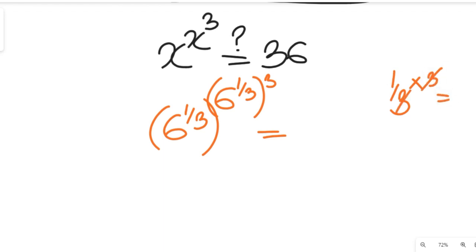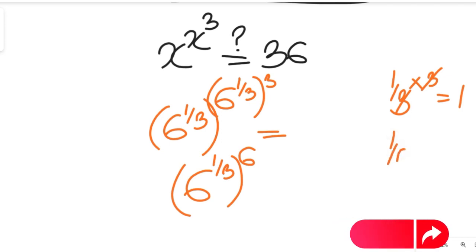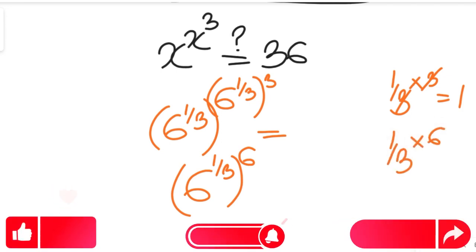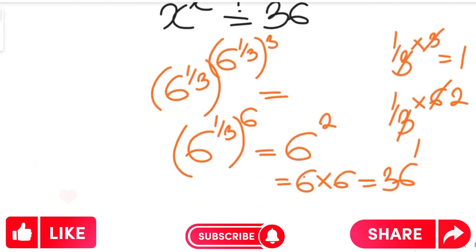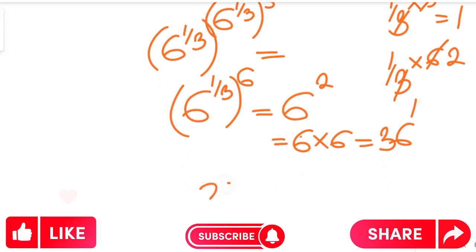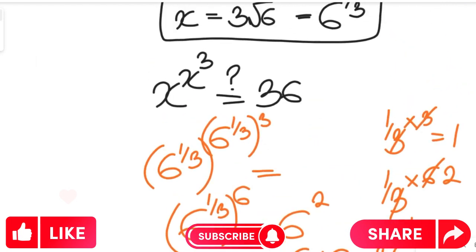Now 1 over 3 multiplied by 6 gives us 2, so this becomes 6 to the power of 2. And 6 to the power of 2 is equal to 6 multiplied by 6, which equals 36. Our solution x equal to the cube root of 6 satisfies the original exponential equation.